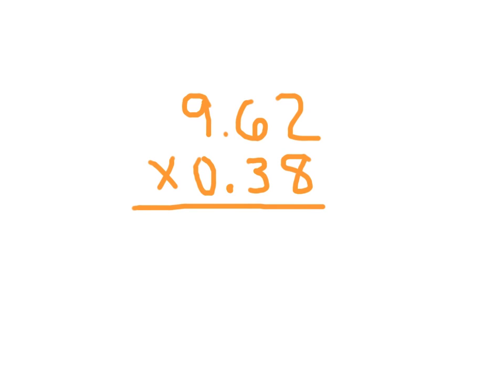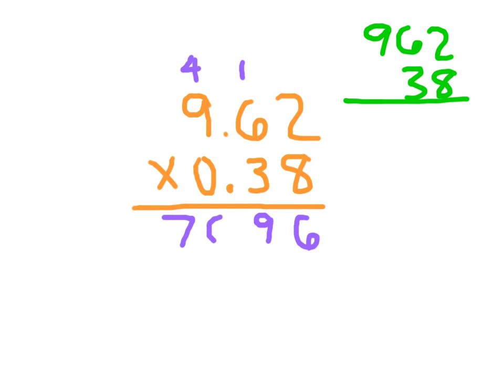Here we have 9.62 times 0.38. Really think of that product of 962 times 38. That's what we're thinking about. Do not worry about the decimal point until we're ready for our final answer. We'll start with the 8. 8 times 2, which is 16. Place the 6, regroup the 1. 8 times 6, which is 48, plus 1, which is 49. Place the 9, regroup the 4. 8 times 9, which is 72, plus 4, which is 76.